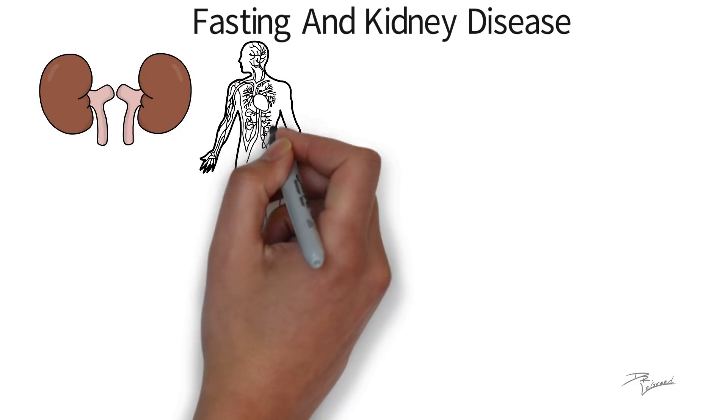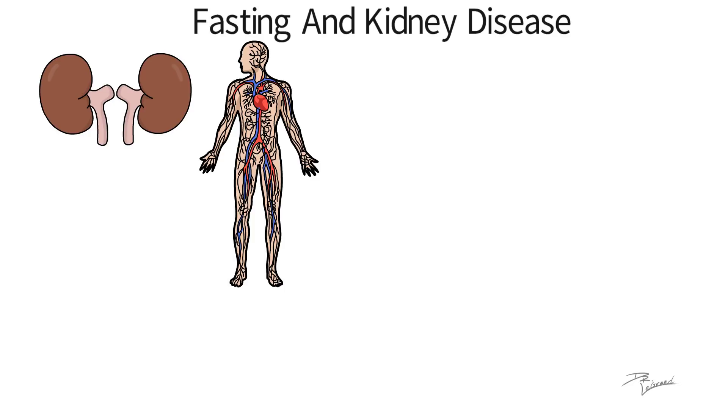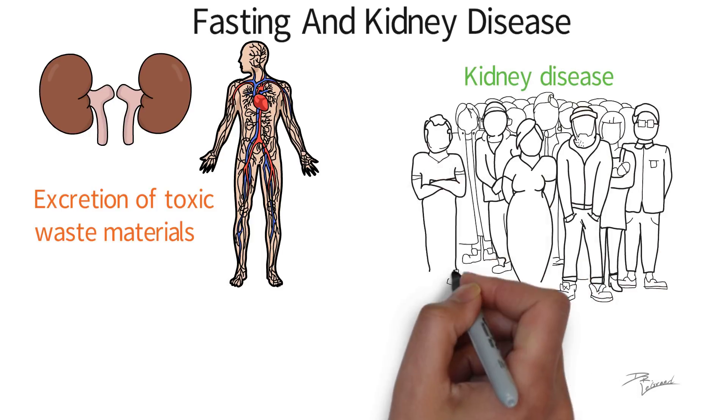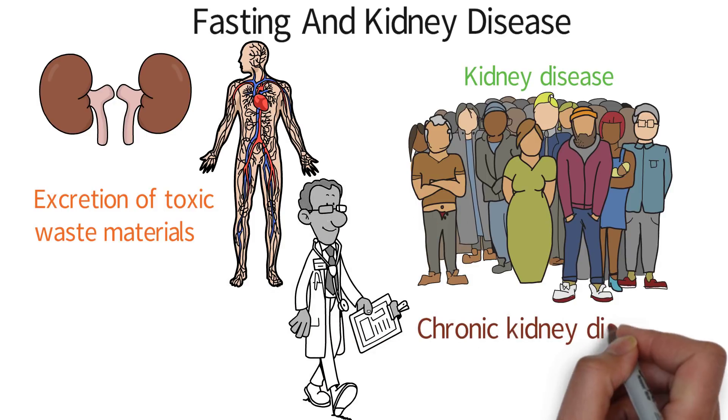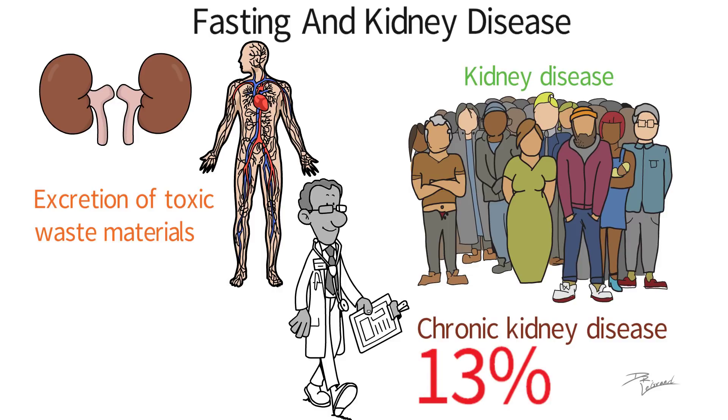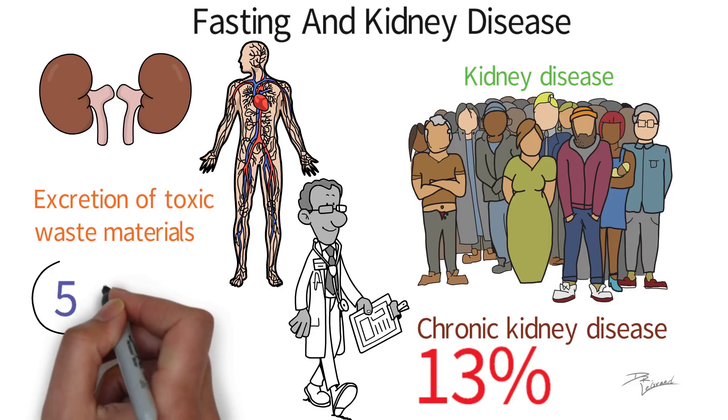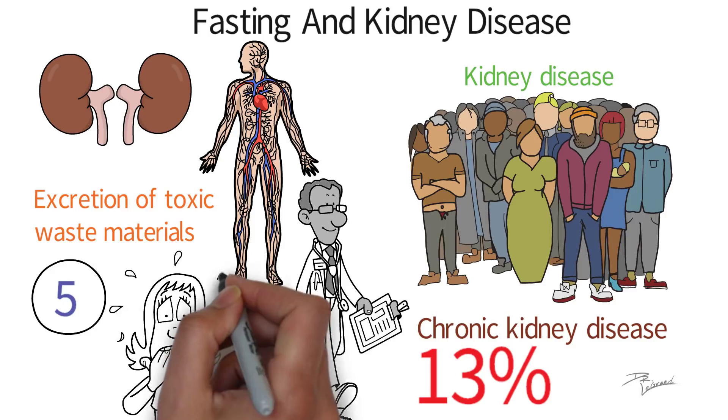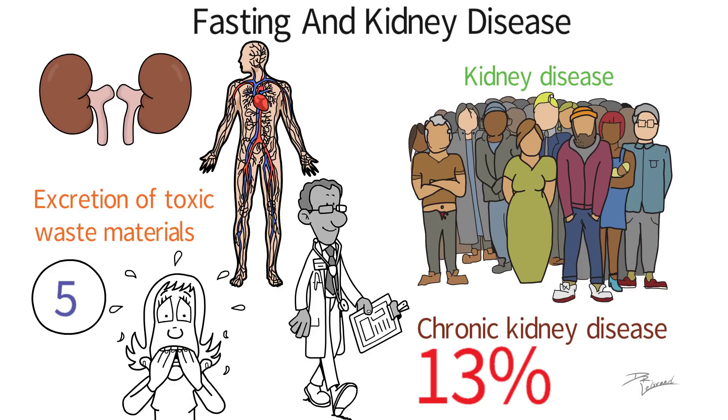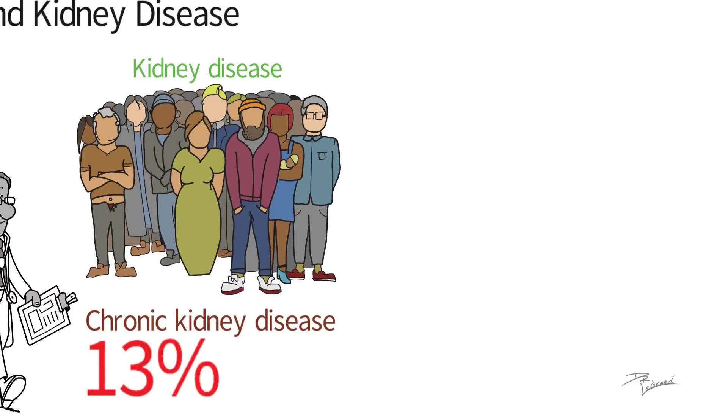The kidneys play an important role in the body. They assist in excretion of toxic waste materials through urination. Unfortunately, kidney disease is a relatively common disease and considered a public health concern. In one study, scientists found that chronic kidney disease may affect up to 13% of the global population. There are five different stages of chronic kidney disease and without treatment, the condition progresses through these stages up to the point where fatal complications may be reached.